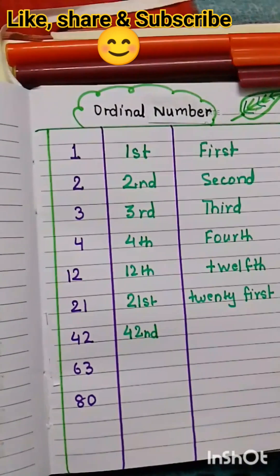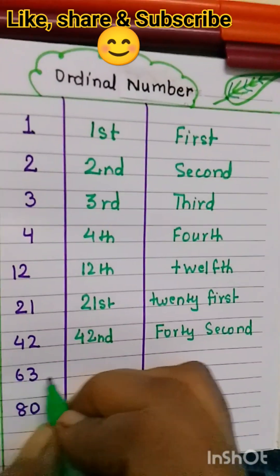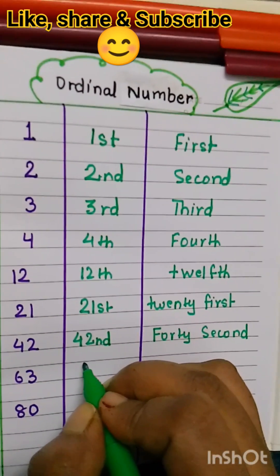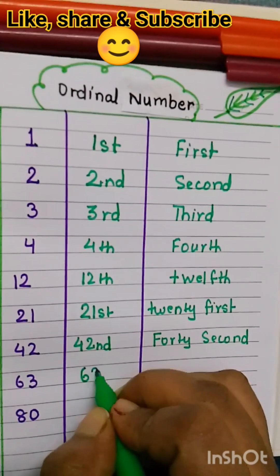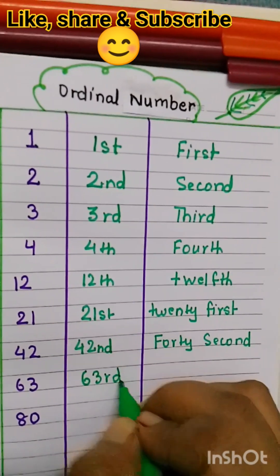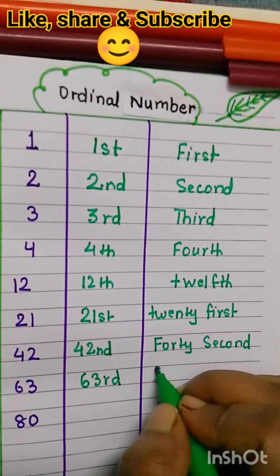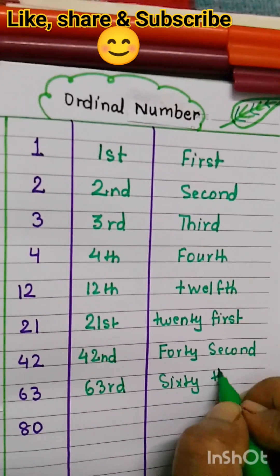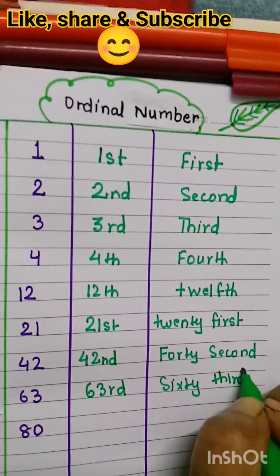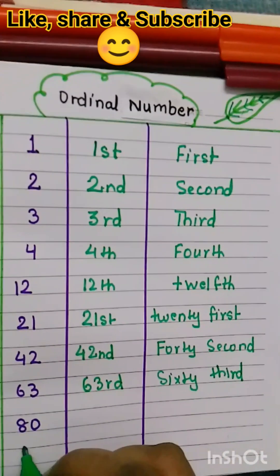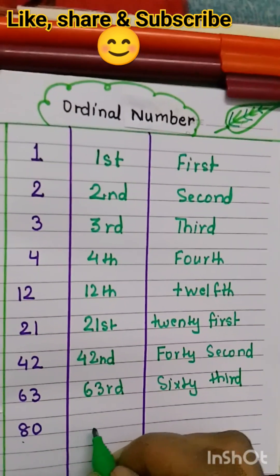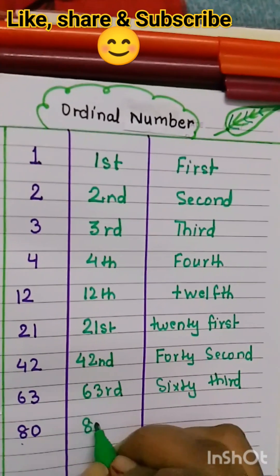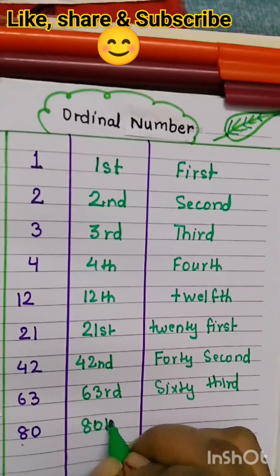This is sixty-three, so we have to write here sixty-third — sixty-third. Next, eighteenth — we have to write here eighteenth.